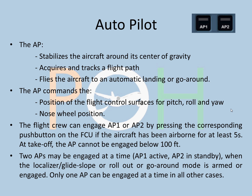Let's talk about Autopilot. There are two switches on the FCU panel on the top. The Autopilot stabilizes the aircraft around the center of gravity, acquires and tracks the flight path, and flies the aircraft to an automatic landing or go-around. It commands the position of flight control surfaces for pitch and roll — rudder, ailerons, elevators, spoilers — everything is controlled by the Autopilot when active. It also caters for nose wheel position, so during an automatic landing it will maintain centerline.